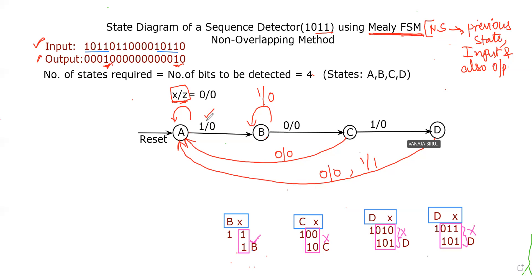We also need to find the transition for X=0, because X is a single variable with two possible values. For X=0, it always goes to the reset state, which is the self-state A, with Z=0. This is because the detection of four bits is not completed at this level. With present state A, both combinations are now completed.